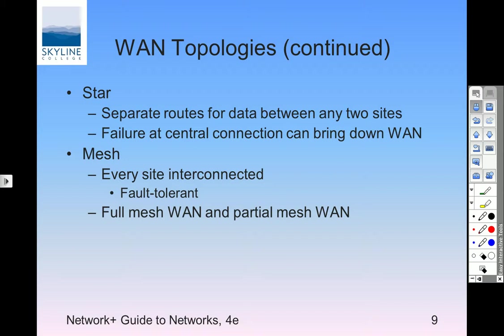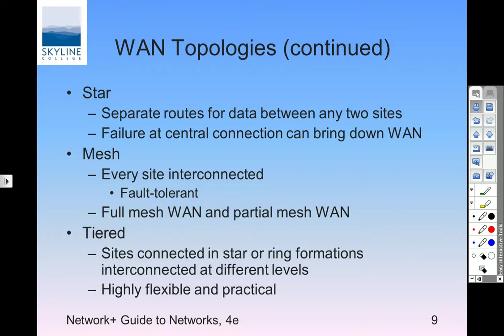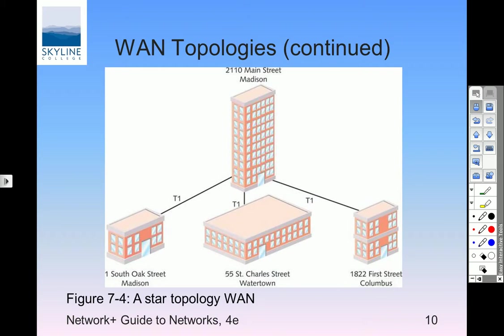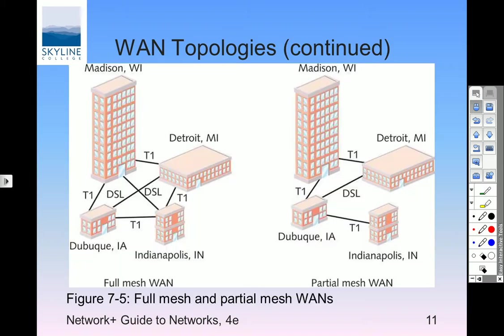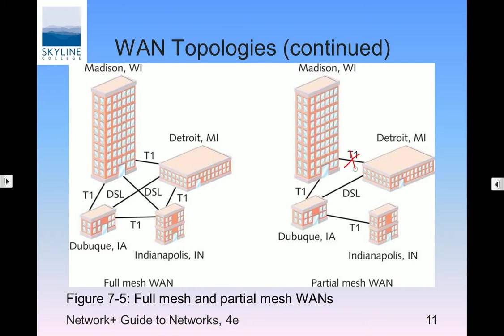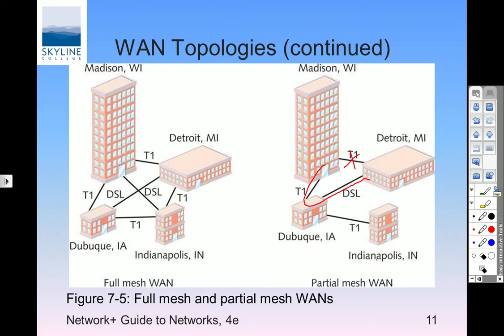Full mesh and partial mesh are both going to be expensive because you've got to buy all those connections. Tiered topology: sites are connected in star and ring formations interconnected at different levels — some flexibility with these things. In the partial mesh, the outlying nodes in Indianapolis aren't important — they're hanging in the wind. If they go down, they're down. But for the core mesh nodes, if one connection fails there are alternate data paths.